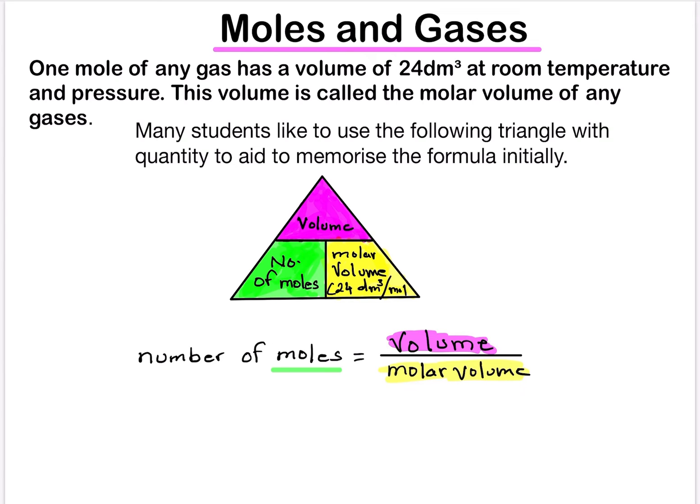So on the top we have the volume, on the left side we have number of moles, on the right side we have molar volume that is 24 dm³ per mole. Therefore number of moles equals to volume divided by molar volume.